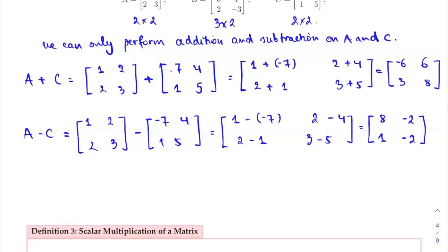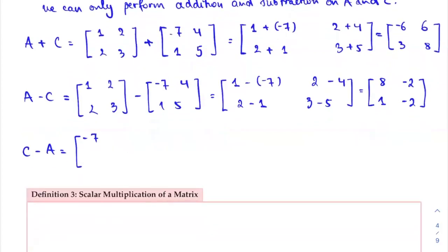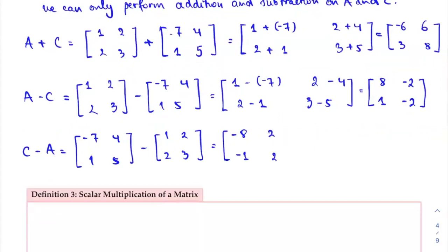When we say to be careful with matrix subtractions because they're not commutative — let's do C minus A and see what happens. C minus A: [negative 7, 4; 1, 5] minus [1, 2; 2, 3] gives: negative 8, 2, negative 1, 2. So C minus A is the negative of A minus C. In other words, A minus C equals negative 1 times (C minus A).